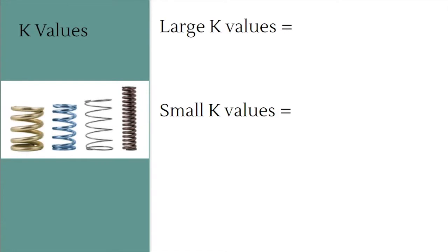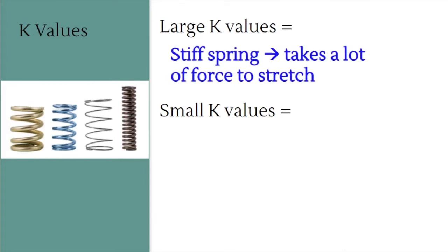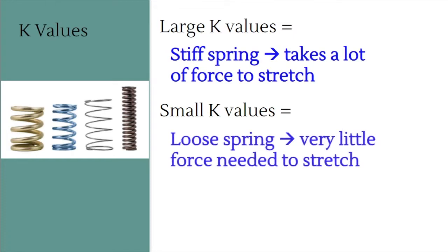k tells us how stretchy a spring is. A large k value means a stiff spring — one that requires a lot of force to stretch. Looking at the image, the gold spring and the brown spring on the right are stiff springs. A small k value means a loose spring, requiring very little force to stretch. For example, the spring in a pen has a small k value, while trampoline springs, car springs, or bike springs are stiffer and have bigger k values.